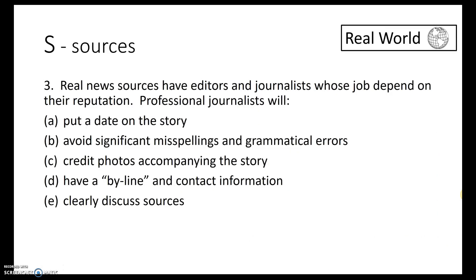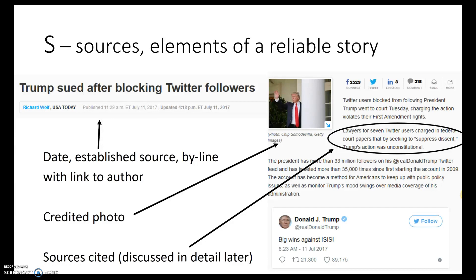Real news sources have editors and journalists whose jobs depend on their reputation. Professional journalists will put a date on the story, avoid significant misspelling and grammatical errors, credit photos, include a byline and contact information, and clearly discuss their sources. Unfortunately, the news has been flooded with garbage journalism that isn't real, so it's on the consumer to dig into the information to figure out if it's valid. Elements of a reliable story include a date, an established source, a byline with a link to the author, credited photos, and cited sources.